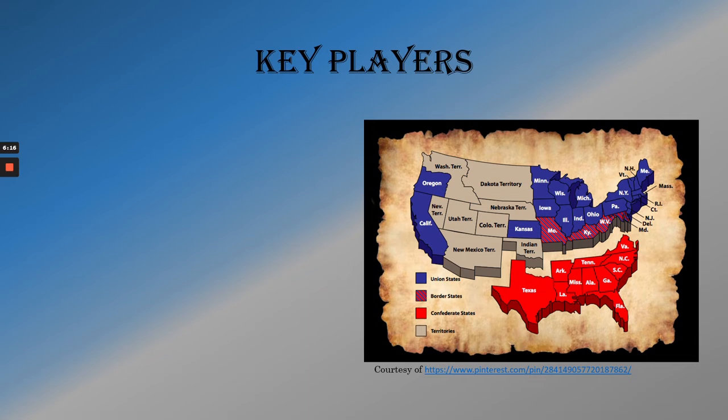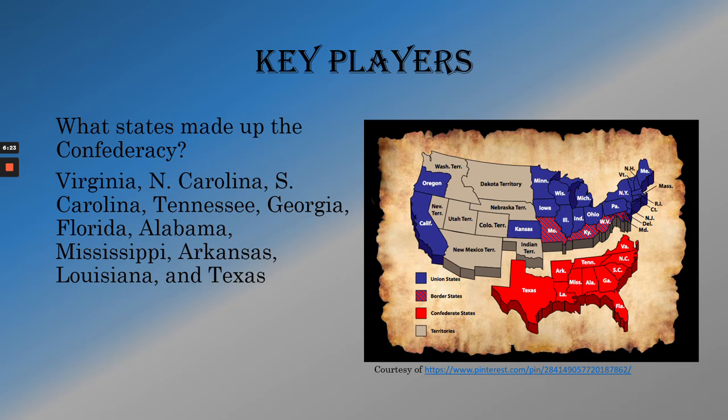So who are the key players? First let me go over the states that make up the Confederacy. Starting in the northern part: Virginia, North Carolina, South Carolina, and Tennessee. Then moving west: Georgia and Florida, Alabama, Mississippi, Arkansas, Louisiana, and finally Texas. These are the 11 states that make up the Confederacy.